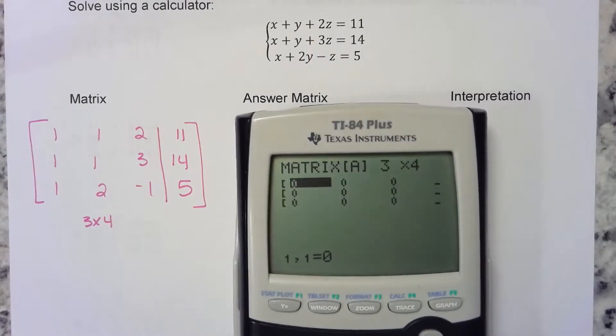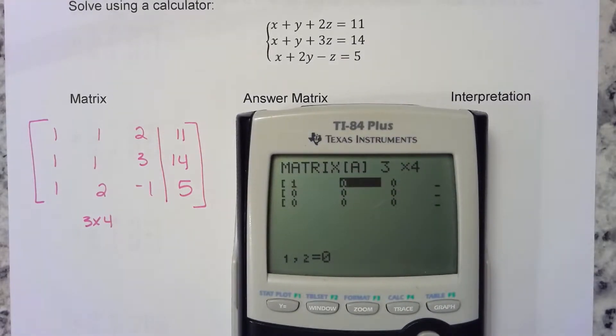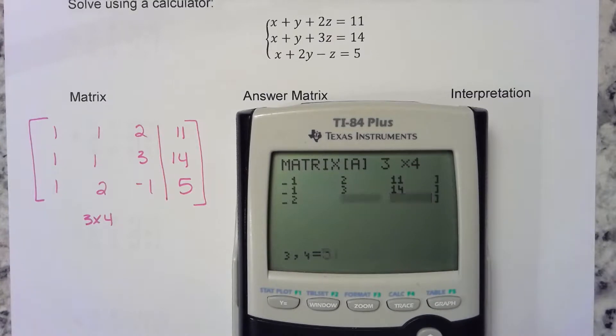Now just enter all of those elements: one enter, one enter, two enter, eleven enter, like that. Double-check and make sure you entered everything correctly, kind of like sending a text before you proofread it—sometimes it says something you don't want it to say.